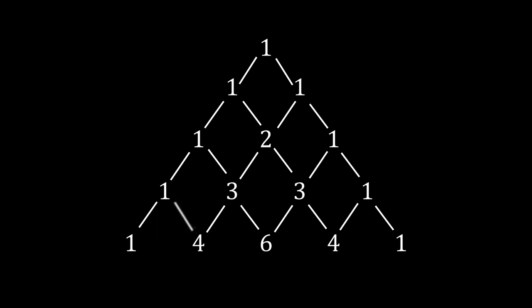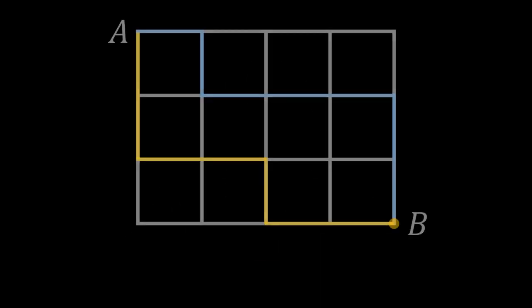So, ultimately, Pascal's triangle really just represents the number of paths to each point. For example, the number 6 here really just represents that there are 6 paths to that point.